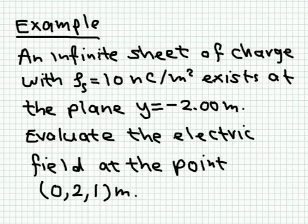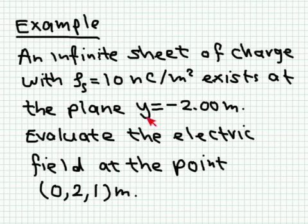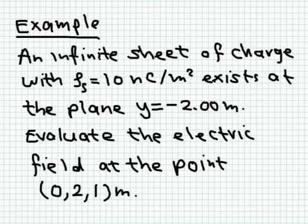Let's look at one example. We have an infinite sheet of charge with surface charge density 10 nC/m² existing at the plane y = −2. We would like to evaluate the electric field at the point (0, 2, 1) meters. The direction of the field depends on which side of the plane the observation point is. The field is constant — equal to Ru_s divided by 2ε₀ in the normal direction — because it's an infinite plane.